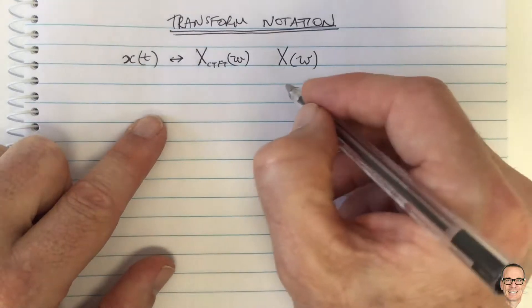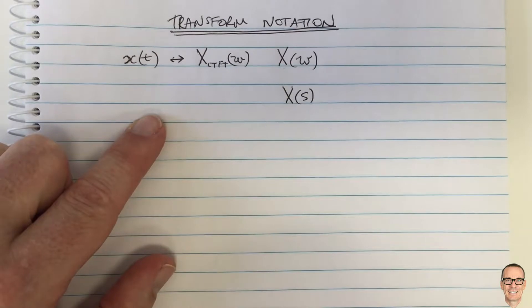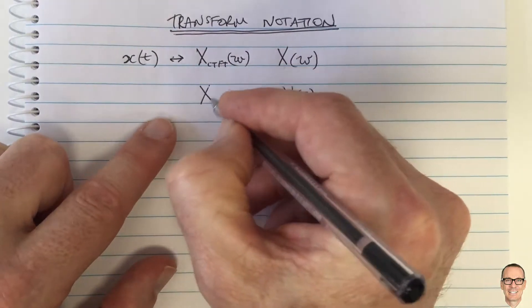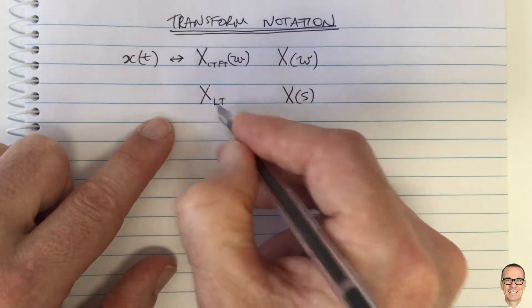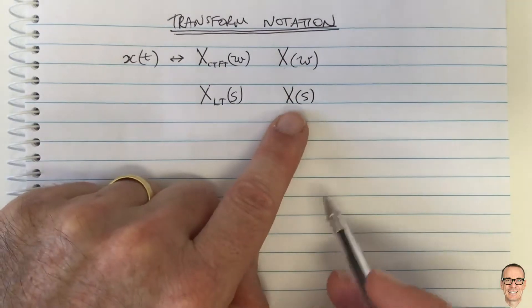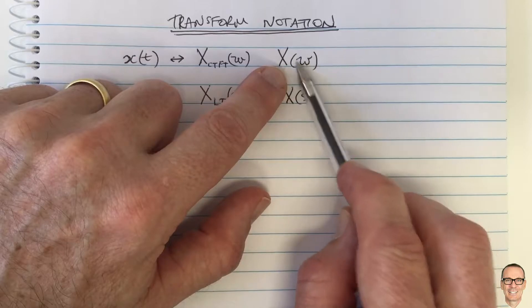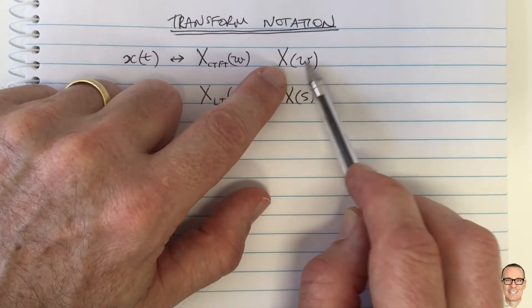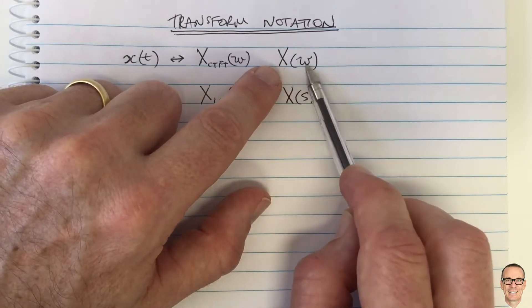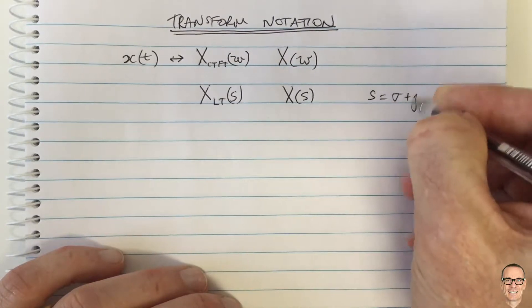And the confusion comes when we start looking at Laplace transforms, because often that's just written x of s. And really it probably should be, to be clear, it should be the Laplace transform. We should put a subscript on the x, saying Laplace transform. Because any function, the function is defined by the variable, and then the thing in the brackets is really the thing you're plotting against. So the function shouldn't be defined by the thing that's in the brackets. See, s equals sigma plus j omega, and so sometimes...